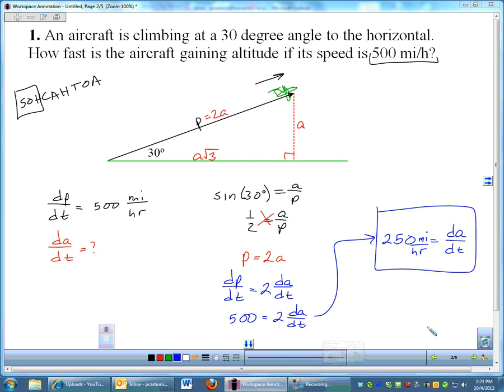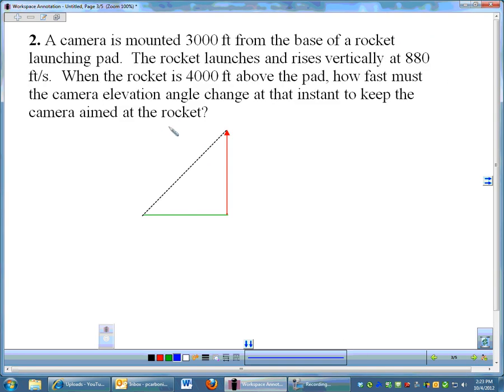All right, let's move on to the next one. They're going to get slowly more difficult. For this problem the camera is mounted 3,000 feet from the base of a rocket launching pad. So this problem, what we have, the red line represents a rocket. I'll draw a better rocket.